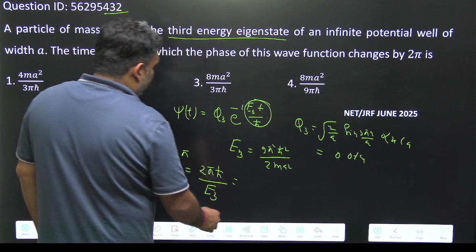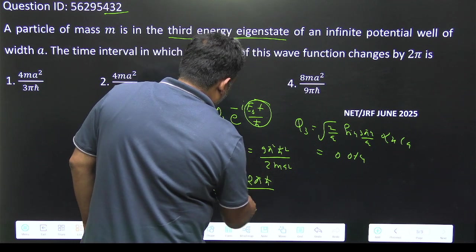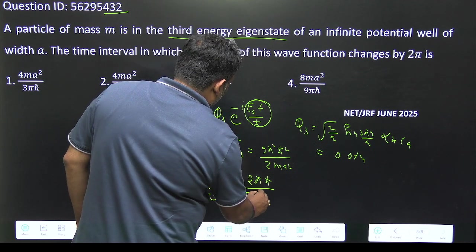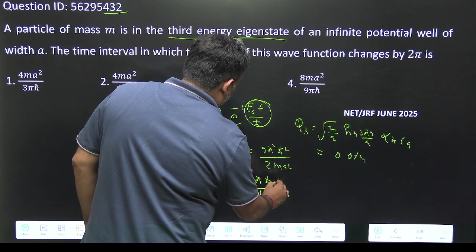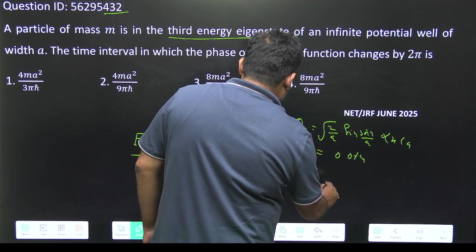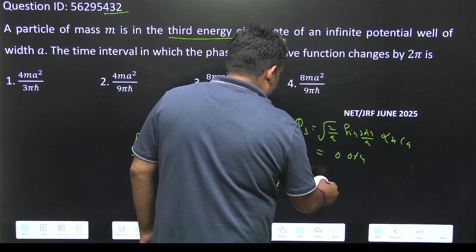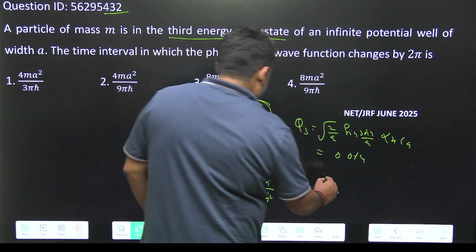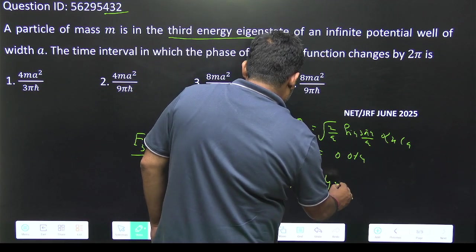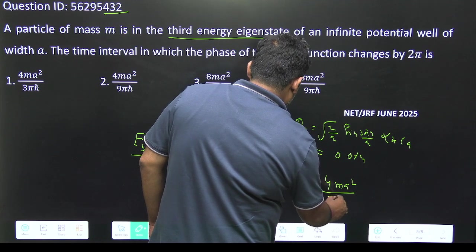Once we put it here, this is 2πℏ and E₃ is 9π²ℏ² into 2ma². So we have 4π... one π will cancel, so we have this particular value as 4ma²/9πℏ.